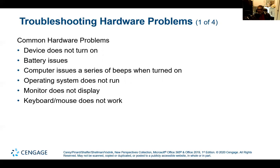If the operating system does not run, your PC is not going to run, so the first thing you need to do is find out why you're getting an indication that it won't run. If the monitor doesn't display, check to make sure it's plugged in — sometimes plugs work their way loose — then check whether it displays the BIOS test; it should show something. If the keyboard or mouse does not work, sometimes there's a conflict because you've plugged in something new that's taking the port of your keyboard or mouse, so check that they're not conflicting.